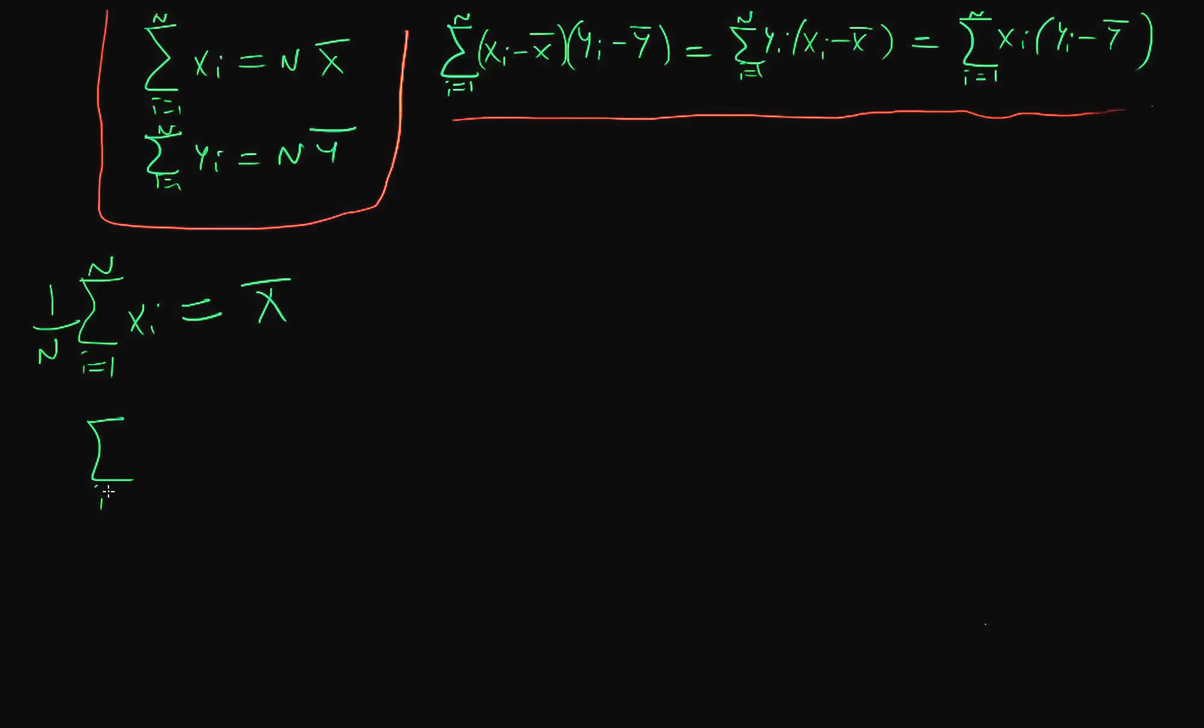We can do that similarly for y, so 1 over n times the sum of yi from 1 to n is y bar. Although I don't explicitly have xi on its own, I can get it quite easily just by multiplying by n. So they both imply that sum of i equals 1 to n of xi equals n x bar, and sum from i equals 1 to n of yi equals n y bar. I've derived these two things on the top left quite easily just by appealing to our definitions of what the sample mean is.